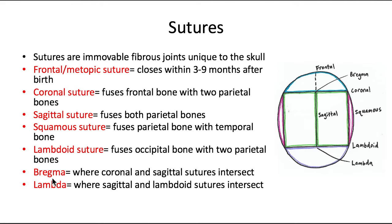There are two intersection points that are vestigial from the fontanelles. The bregma is out in front — that's where the frontal fontanelle used to be — where the coronal and sagittal sutures intersect. The lambda in the back, which matches with lambdoid, is where the sagittal and lambdoid sutures intersect, and that's where the occipital fontanelle used to be.